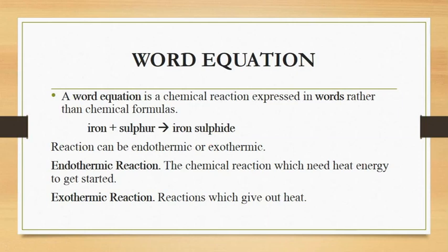In any reaction, energy is either absorbed or released. This gives us two types of reactions: endothermic and exothermic. An endothermic reaction requires energy input to start — the chemical reaction will not start until we provide energy. An exothermic reaction releases energy to the outside, like a combustion reaction which releases heat energy. For synthesis reactions, we mostly provide energy — for example, iron plus sulfur requires energy to react.